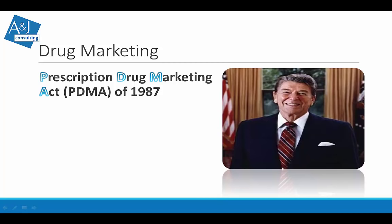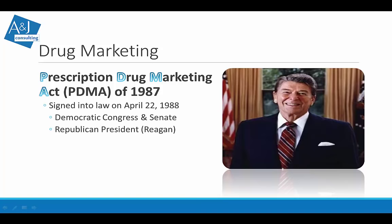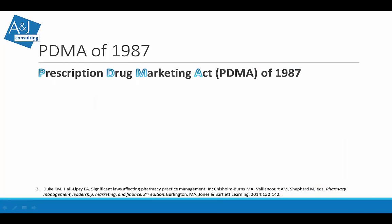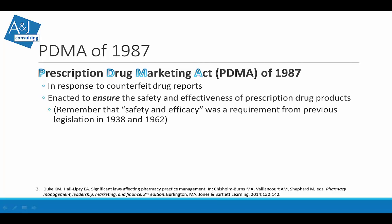The Prescription Drug Marketing Act of 1987 was signed into law in 1988 by President Ronald Reagan — again a Democratic Congress and Senate with a Republican president. It was an amendment to the Food, Drug, and Cosmetic Act, and was enacted in response to counterfeit drug reports, with the goal of ensuring drug safety and effectiveness.